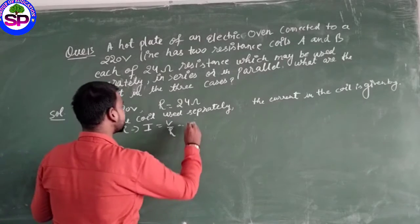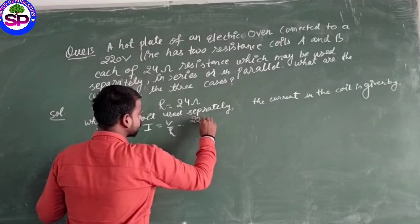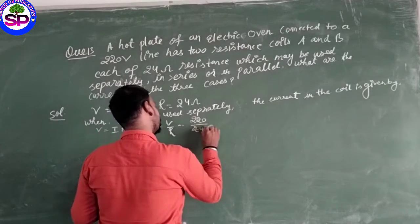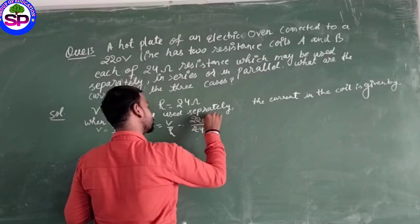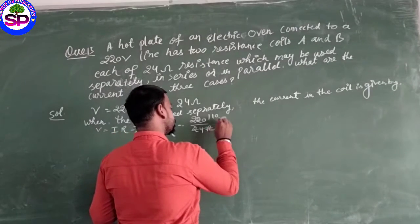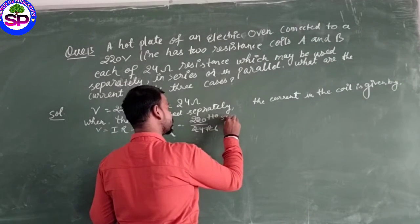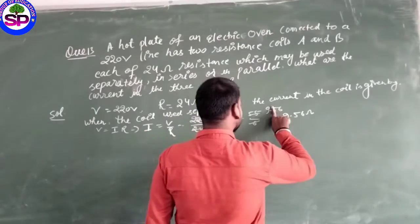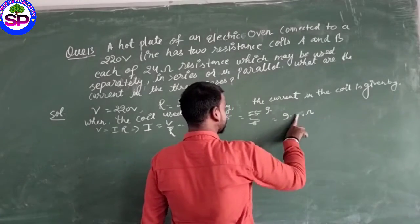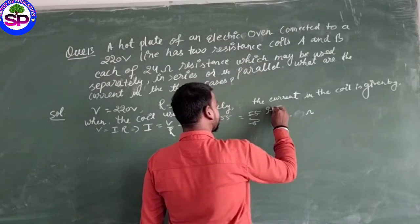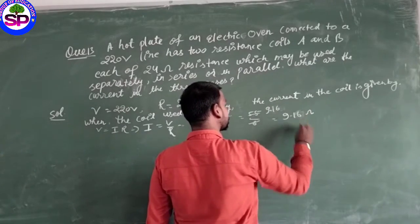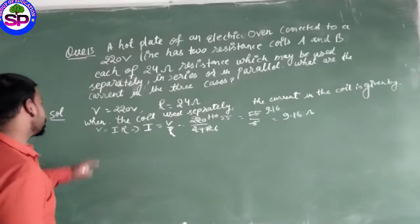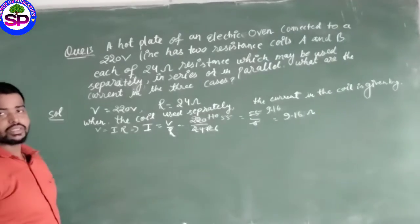I is equal to V upon R. V ki value 220 upon 24, so this becomes 55 upon 6, which equals 9.16 ampere. This is when separately connected.